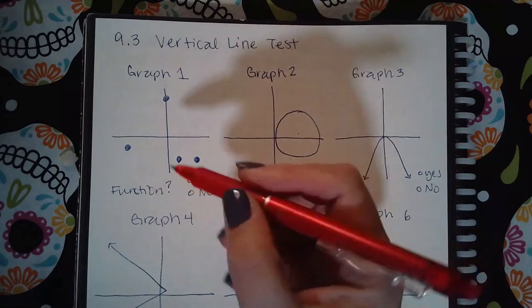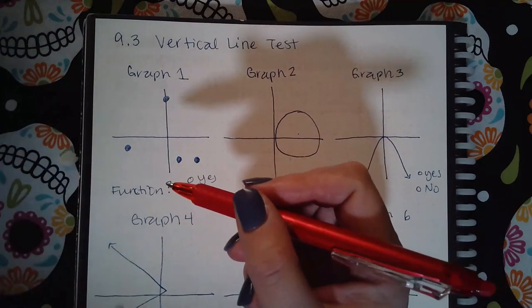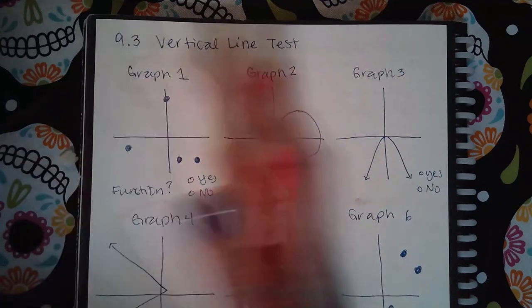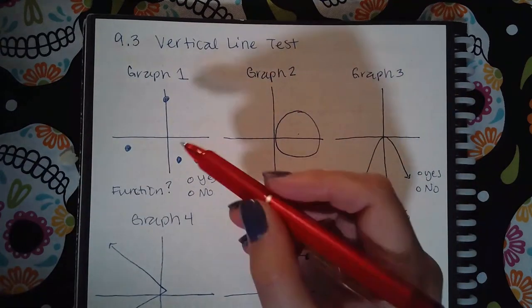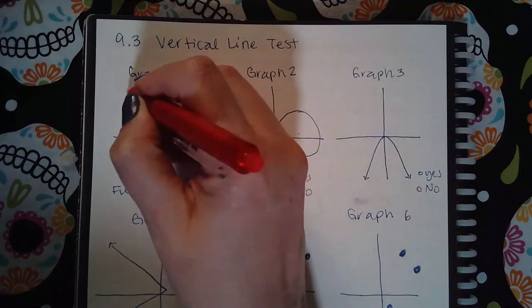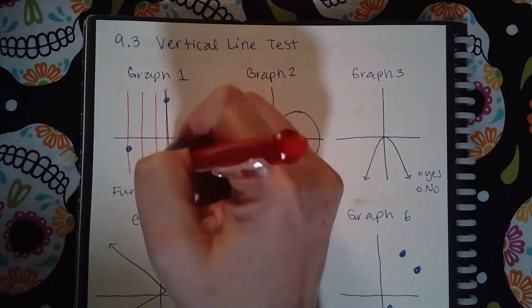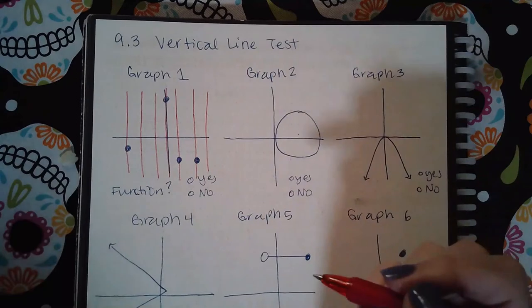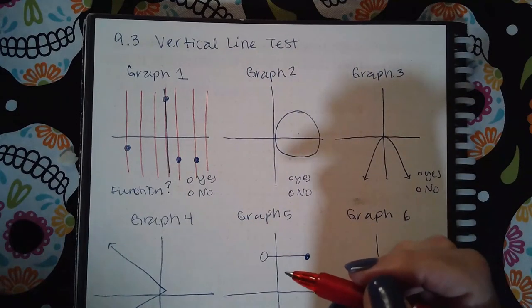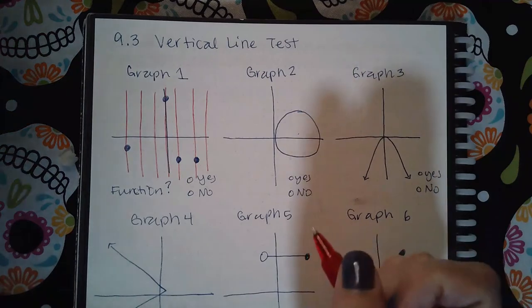What that means is you can either imagine or literally draw in as many vertical lines as you want on the graph. And if any vertical line that you draw touches the graph more than one time, then the image that is shown is not the graph of a function.